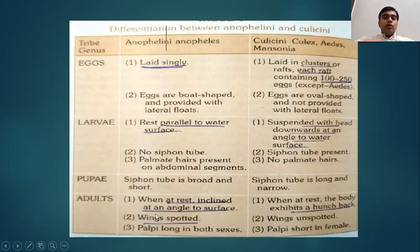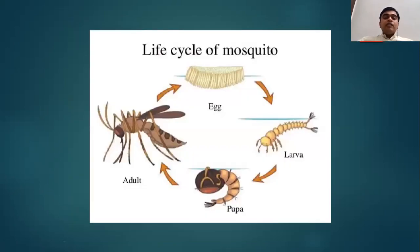The pupae of Anopheles have a broad and short siphon tube, while pupae of Culicini have a long and narrow siphon tube. For adults: Anopheles at rest is inclined at an angle, wings are spotted, and palps are long in both genders. Culicini at rest exhibit a hunchback posture, wings are unspotted, and palps are short in females. The life cycle of mosquito, like most other insects, progresses through eggs, larvae, pupae, and adult. The detailed parasitic life cycle of the malarial parasite will be taught in parasitology lectures.